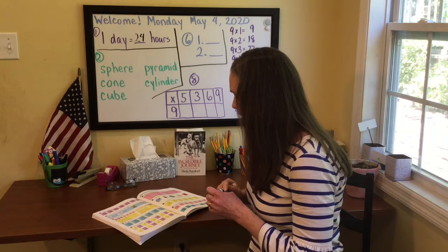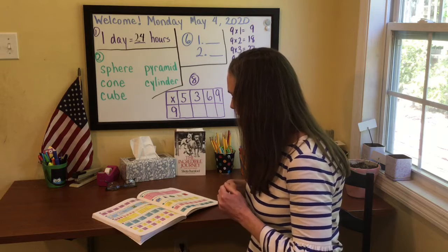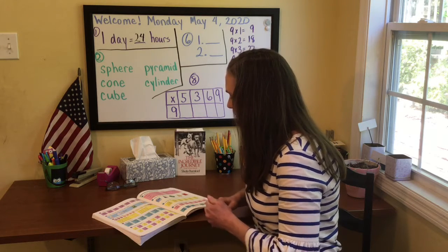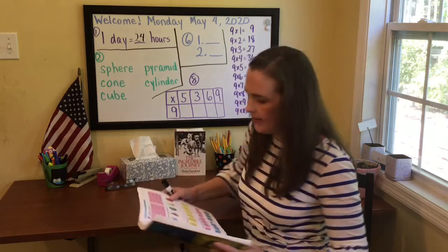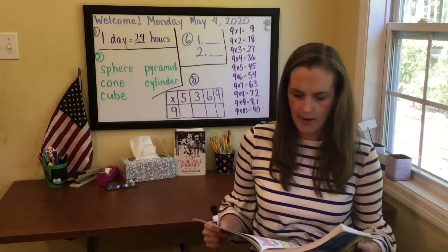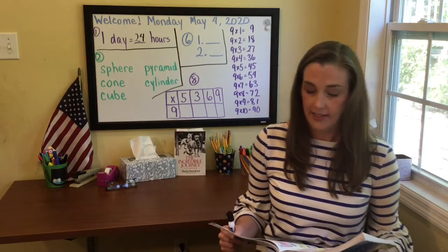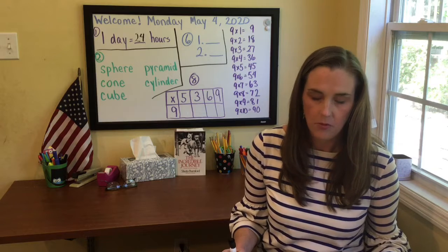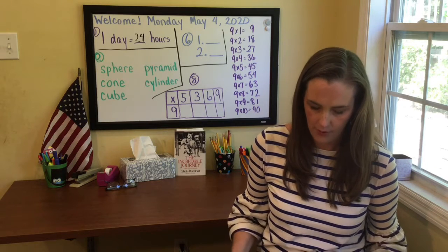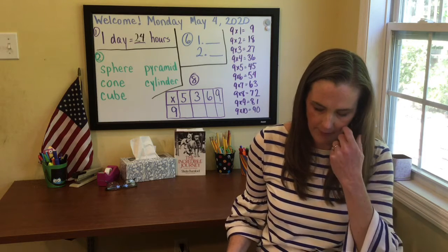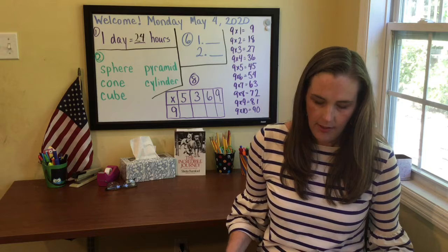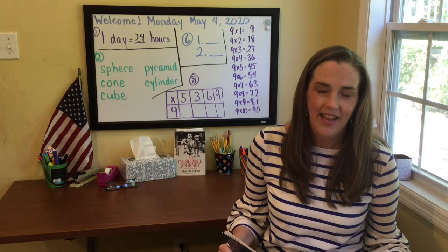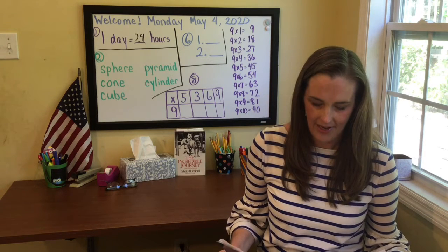Let's go over a few more of these. I think you probably know how many days are in a week. How about how many weeks are in a year? One year equals how many weeks? That's the third one. How many weeks? If you said 52 you're right.